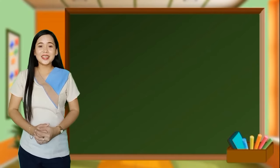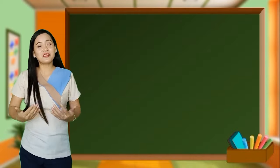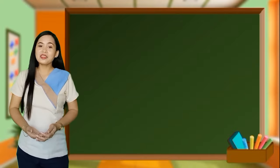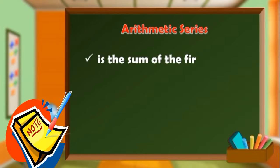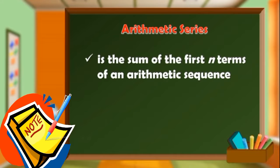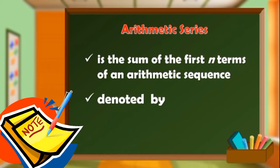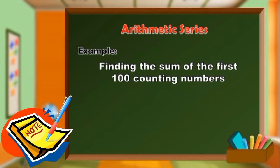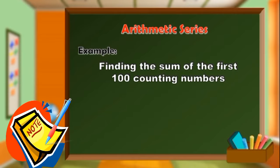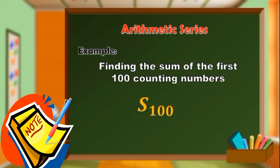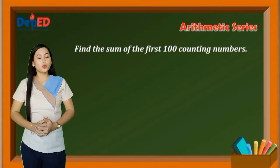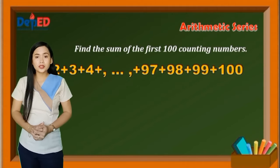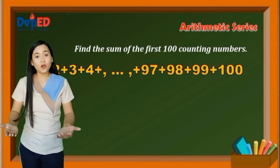Great! You just succeeded in how to determine the arithmetic means of arithmetic sequence. Now, fasten your seatbelts as we move on to arithmetic series. Arithmetic series is the sum of the first n terms of arithmetic sequence, denoted by S sub n. Such that if you are finding the sum of the first 100 counting numbers, then you are looking for S sub 100. Did you know that a certain schoolboy was able to get the sum of the first 100 counting numbers in just a few seconds? Can you also do that? I will give you 10 seconds to figure out the sum.